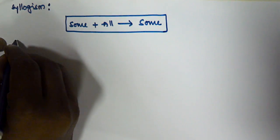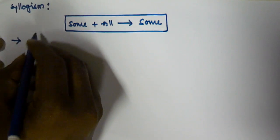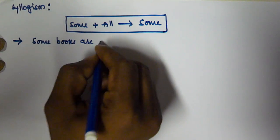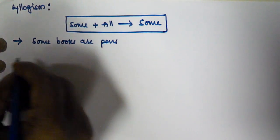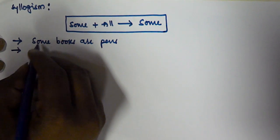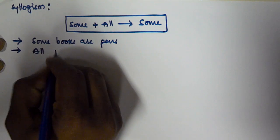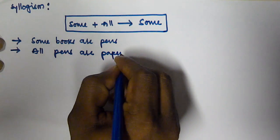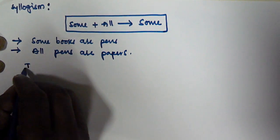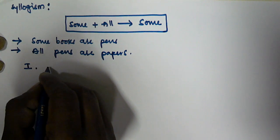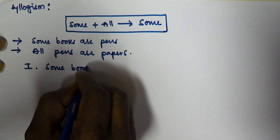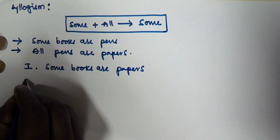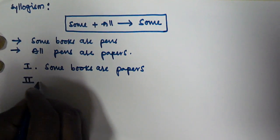Let us consider two syllogism statements. The first one is: some books are pens. The second syllogism given is: all pens are papers. The first conclusion given is: some books are papers.